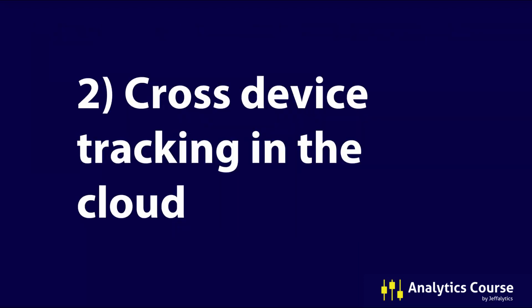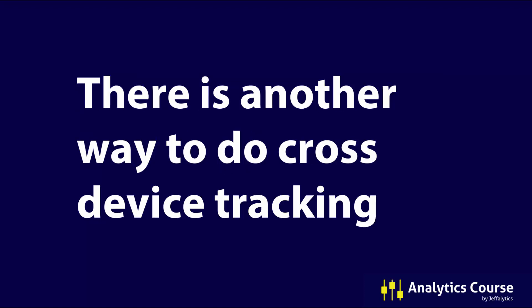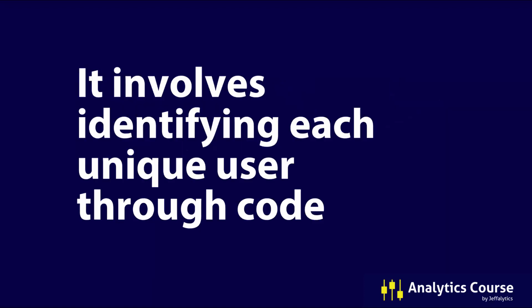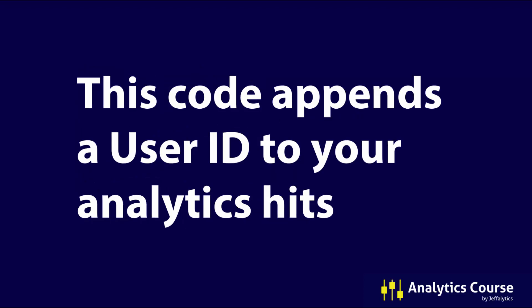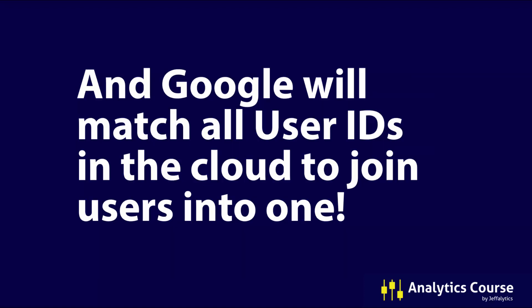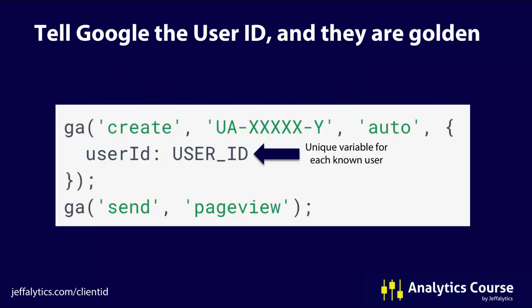The second way you can do cross-device tracking is in the cloud. This doesn't involve manipulating cookies — it involves identifying each unique user through code. This code appends your user ID to the analytics hits that are sent into your Google Analytics data, and Google will match all user IDs in the cloud to join users into one. You have one line in your Google Analytics tracking code where you define your user ID, which is simply a unique variable for each known user. Tell Google the user ID of the person and they will match this up for you in the cloud.